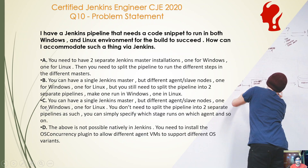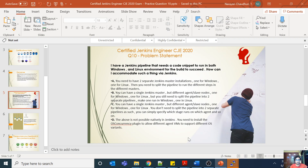Option C: you can have only a single Jenkins master but different agent or slave nodes, similar to B — one for Windows and one for Linux — but you don't need to split the pipeline. You can simply specify which stage runs on which agent. Option D: this is not possible natively in Jenkins; you need to install the OS concurrence plugin to allow different agent VMs to support different OS variants.